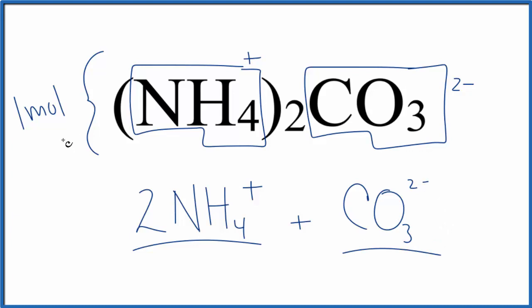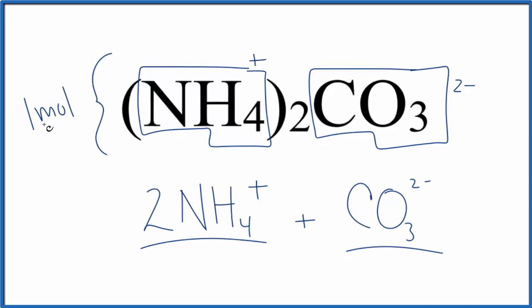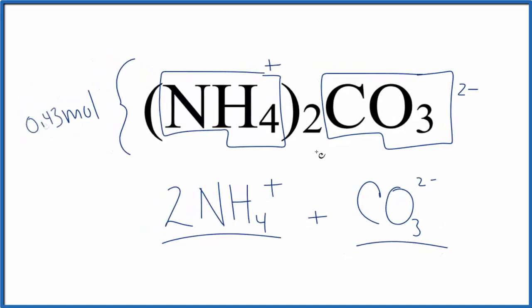What if you're given something like 0.43 moles? So if I'm given 0.43 of the whole compound, I know within that compound I have twice as many ammonium ions. So twice of this number here, 0.86 moles. But since I only have one carbonate ion, this number would be the same, 0.43 moles of the carbonate ion in this 0.43 moles of the entire compound.